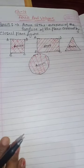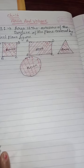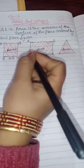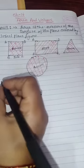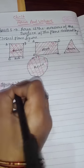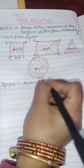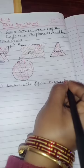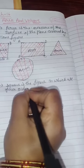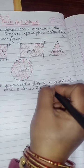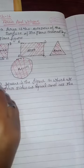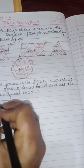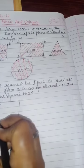Now let us come to the formulas for the square and the rectangle. A square is a figure in which all four sides are equal and all angles are equal to 90 degrees.